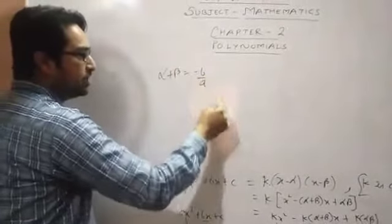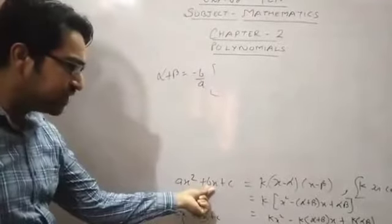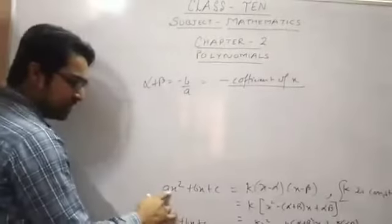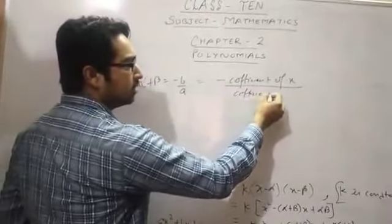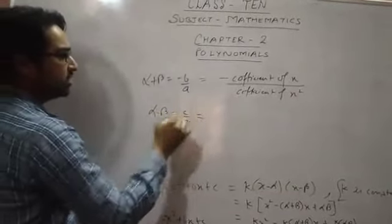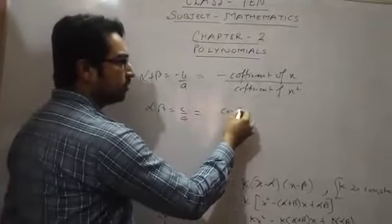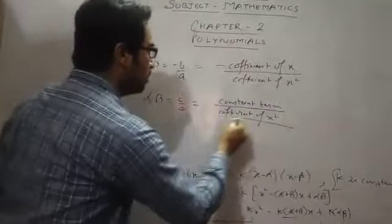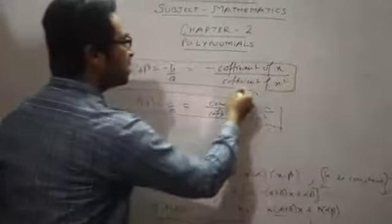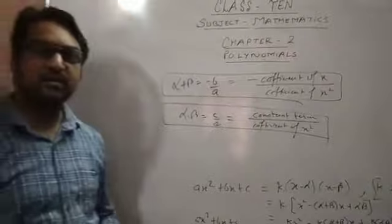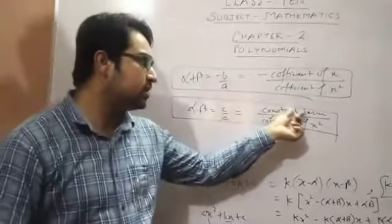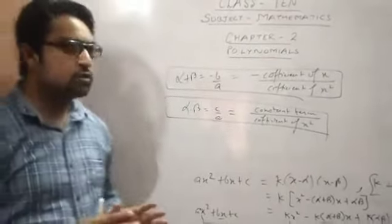Alpha + beta equals -b/a, where b is the coefficient of x and a is the coefficient of x². And alpha times beta equals c/a, where c is the constant term and a is the coefficient of x². So the sum of zeros equals negative coefficient of x divided by coefficient of x², and the product of zeros equals the constant term divided by the coefficient of x². This is the relationship between the zeros and the coefficients of the polynomial.